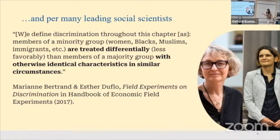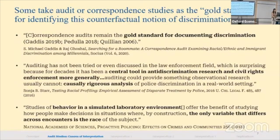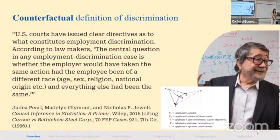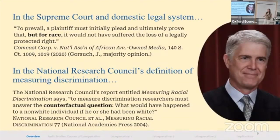These studies have been used in economics, sociology, and political science to provide proper evidence of discrimination along some characteristic — famously used to study racial discrimination in the labor market, and also sex discrimination and others. The phrase 'different treatment and otherwise identical characteristics in similar circumstances' is what we'll be scrutinizing today. Social scientists claim this is a reasonable approximation of the legal or moral notion of discrimination — it's the gold standard and central tool in anti-discrimination research.